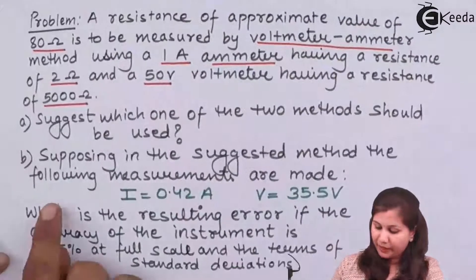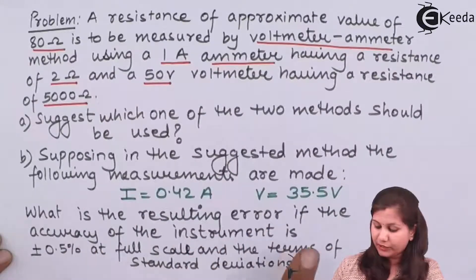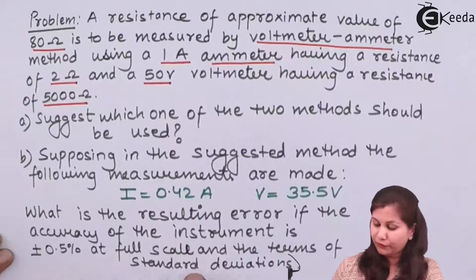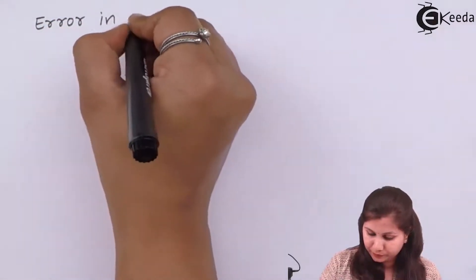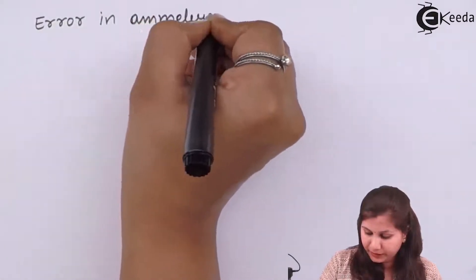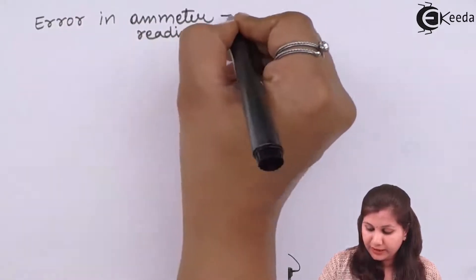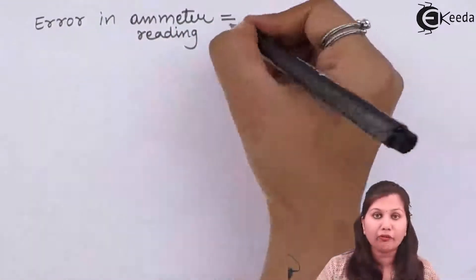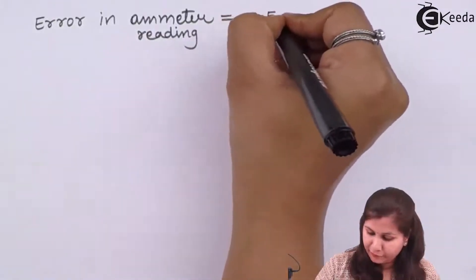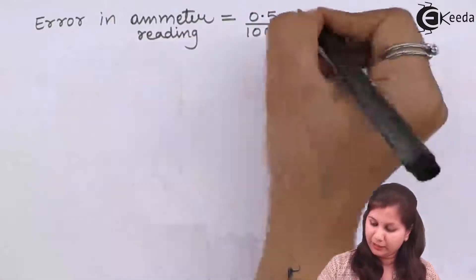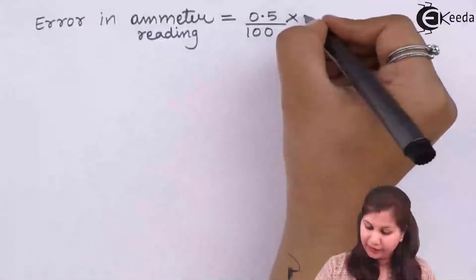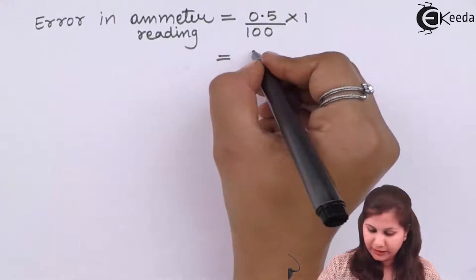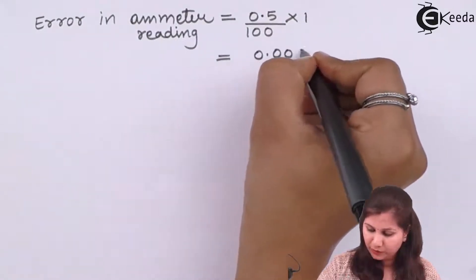In the second part we have to find the resulting error if the accuracy of the instruments is plus minus 0.5 percent of the full scale. The error in the ammeter reading is 0.5 percent divided by 100 of full scale. The full scale of the ammeter is 1 ampere, so the error in the ammeter reading is 0.005 amperes.